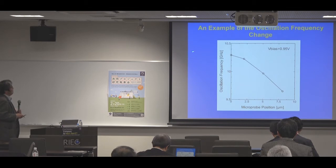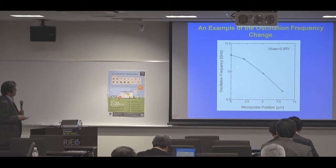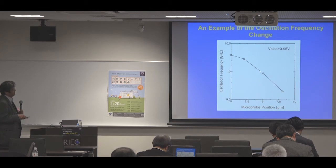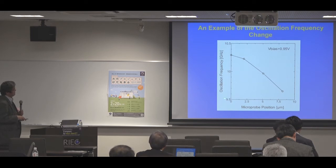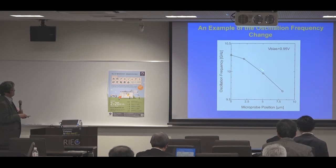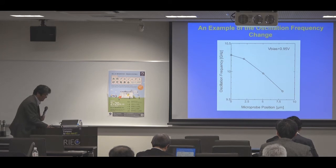This is an example of the oscillation frequency of the fabricated device. The oscillation frequency is plotted as a function of the microprobe position while pushing down the cantilever. The circuit oscillates at around 10 GHz, and when we push down the microprobe the oscillation frequency reduces. This is the basis for the FDSM.